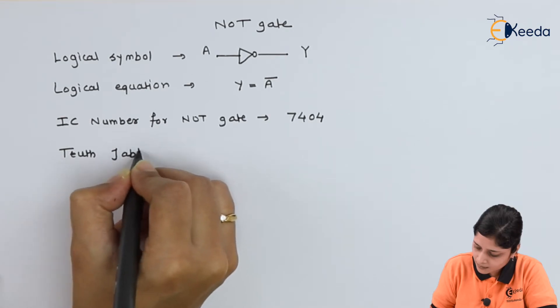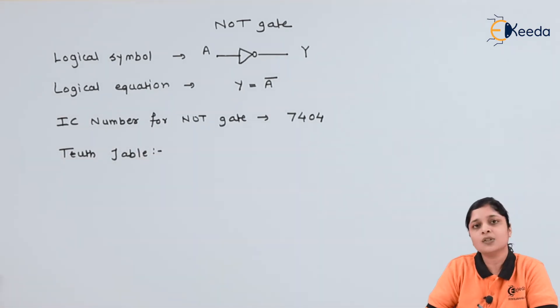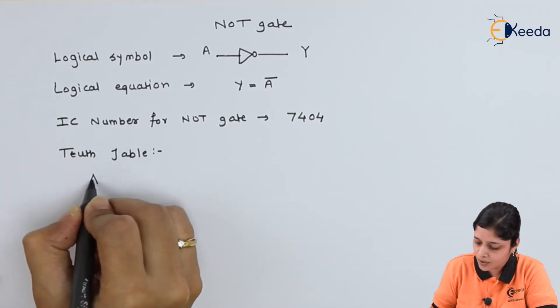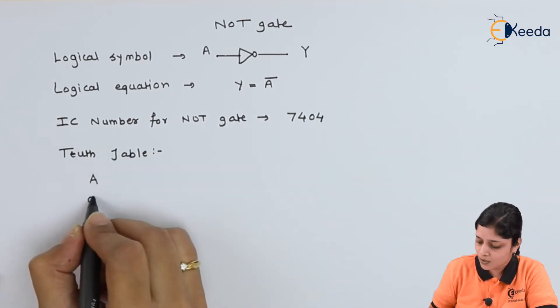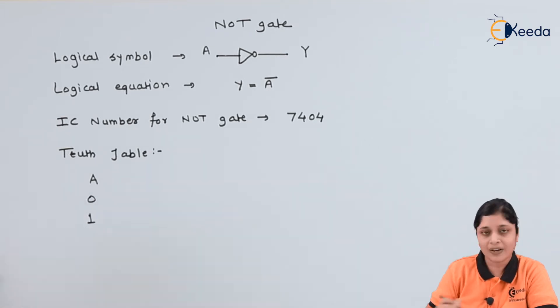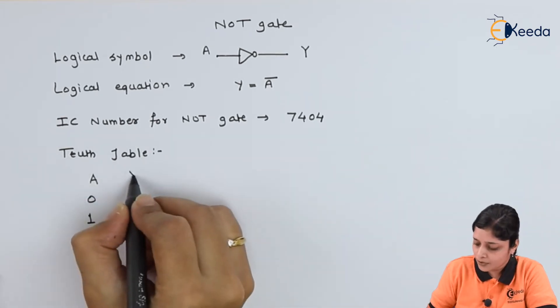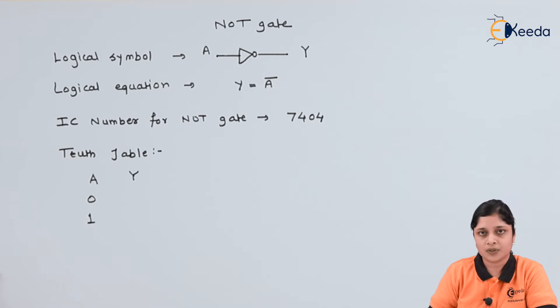Truth table. In the truth table, possible combinations will be as per the inputs. So we have only one input here, so possible combinations according to the binary numbers, that is 0 and 1, are only two. You have to calculate its output.